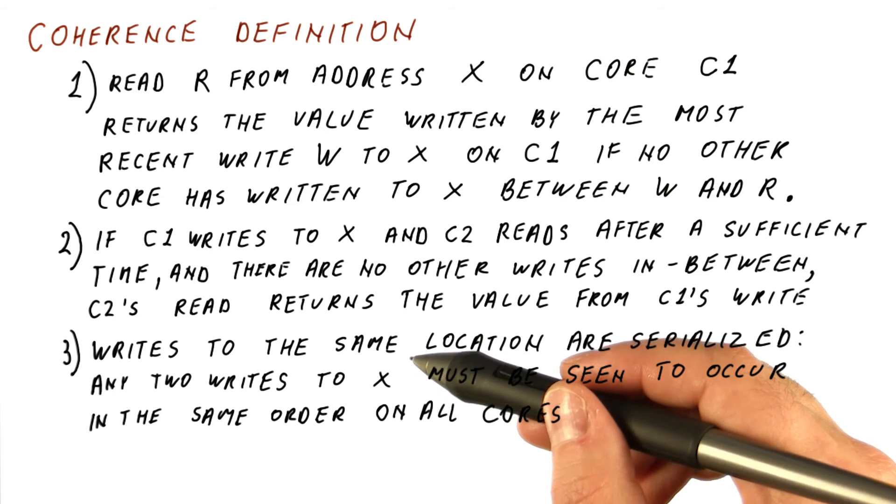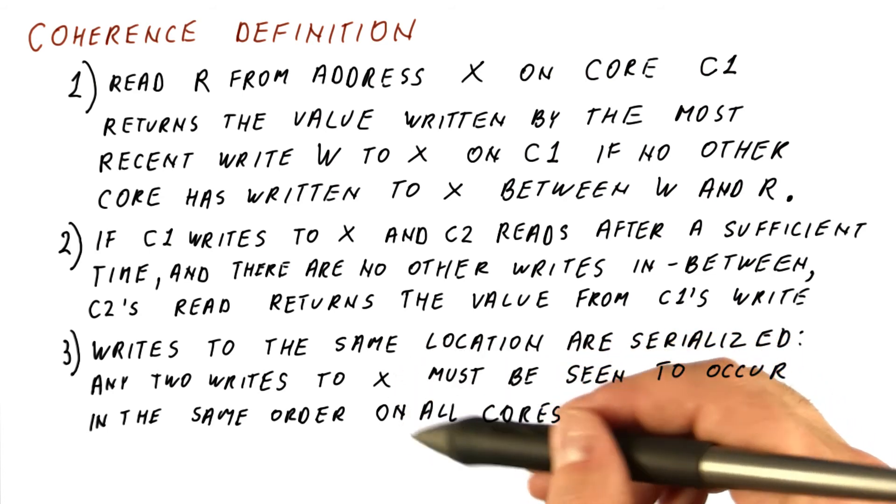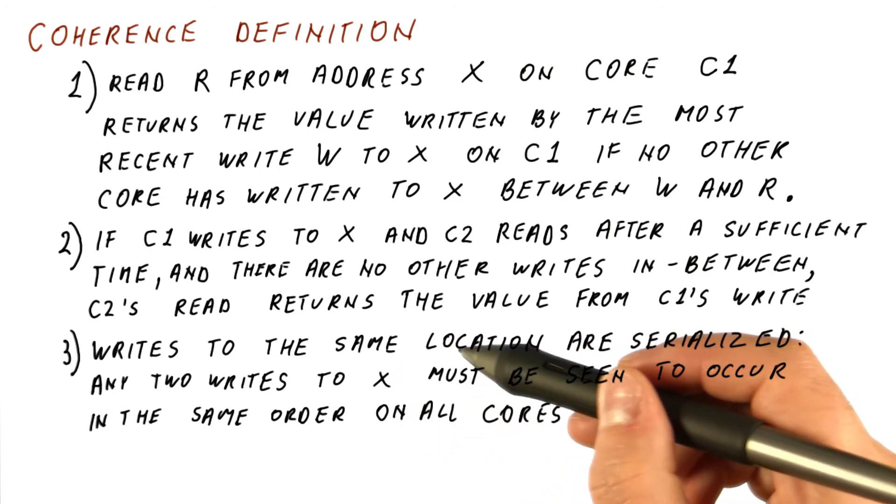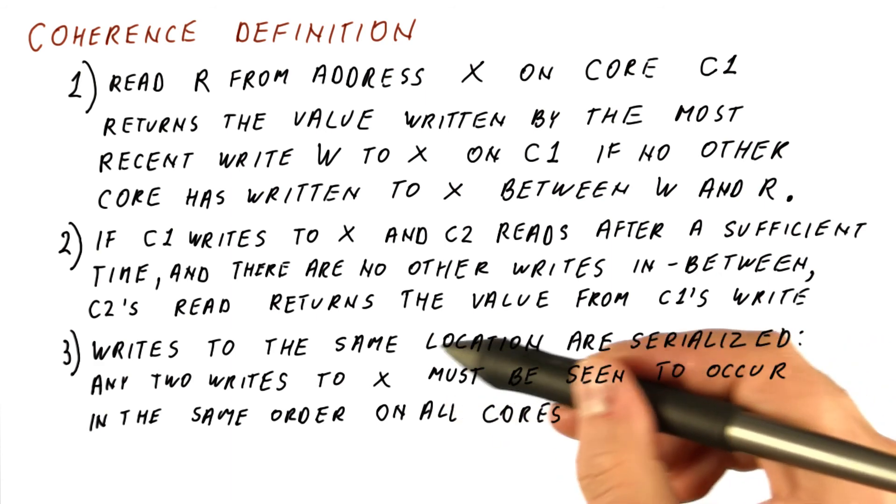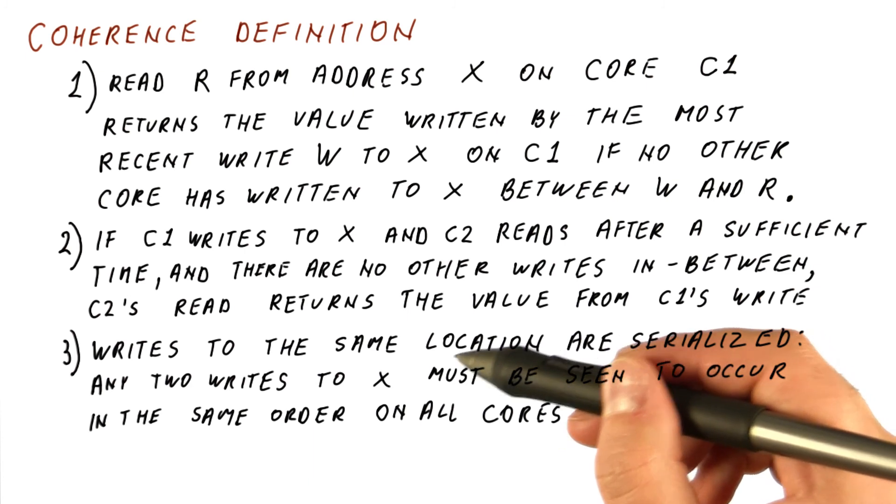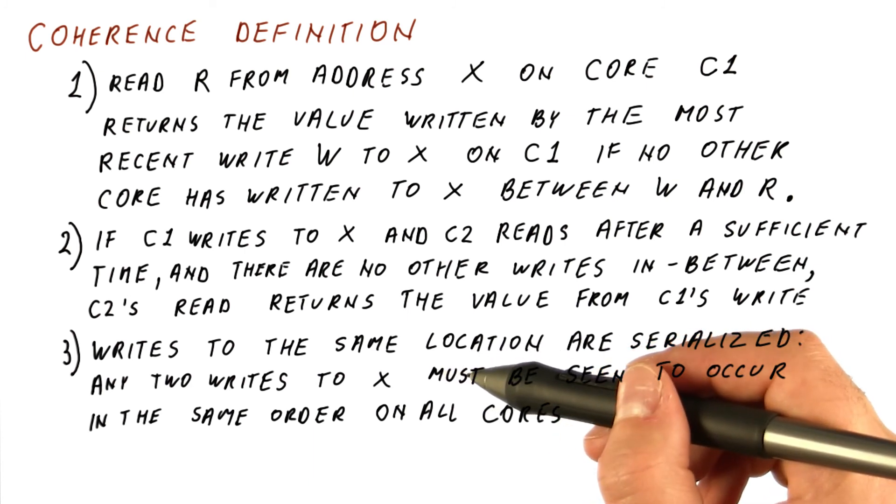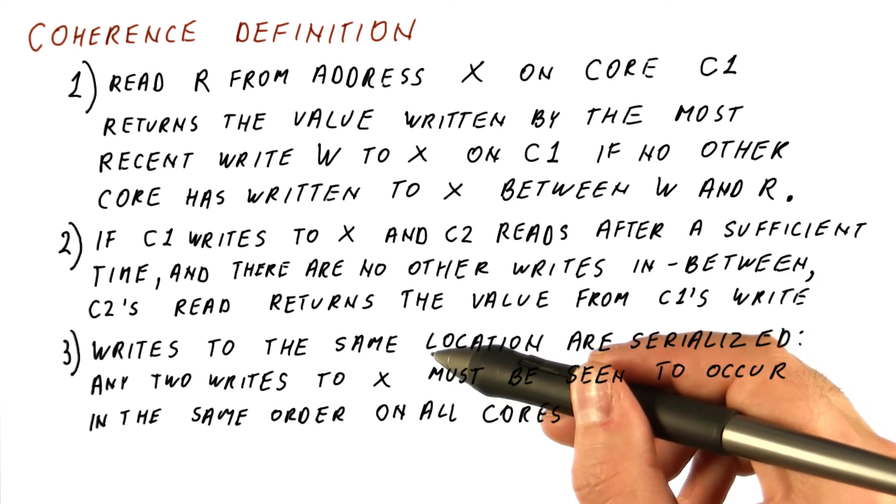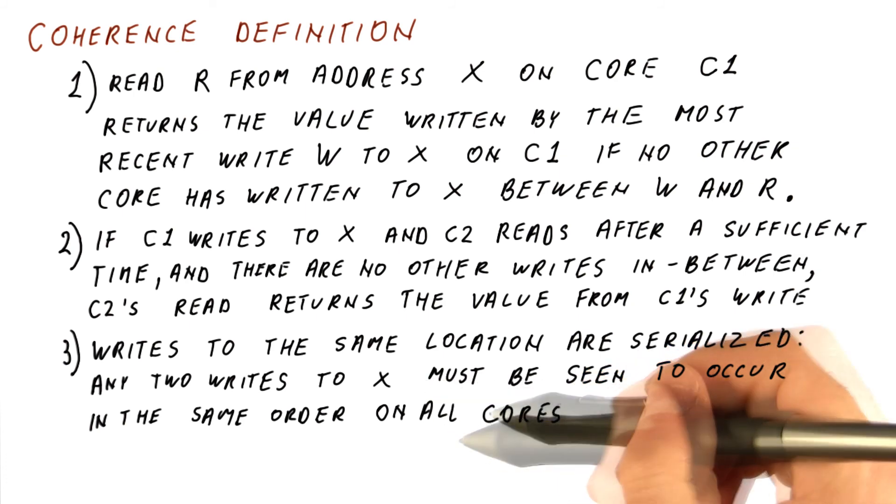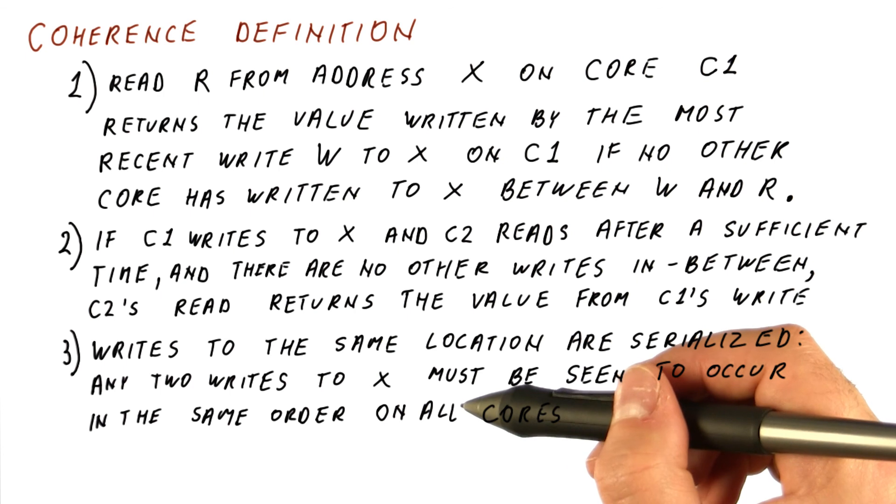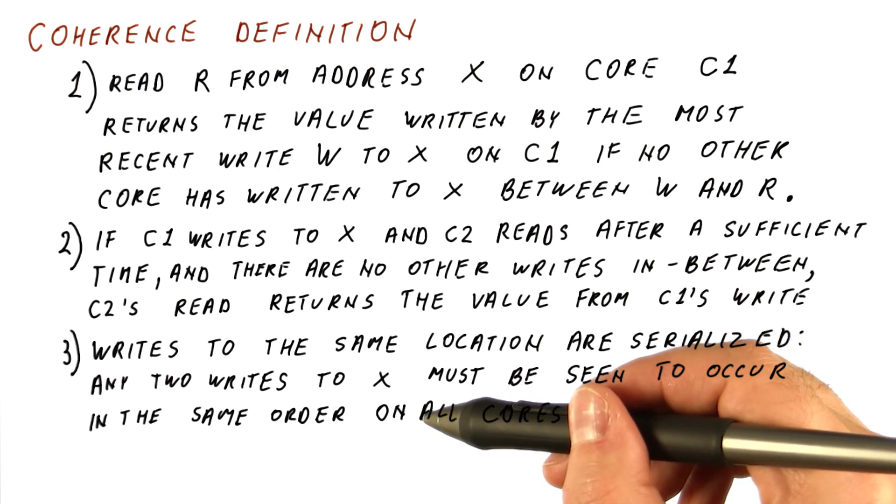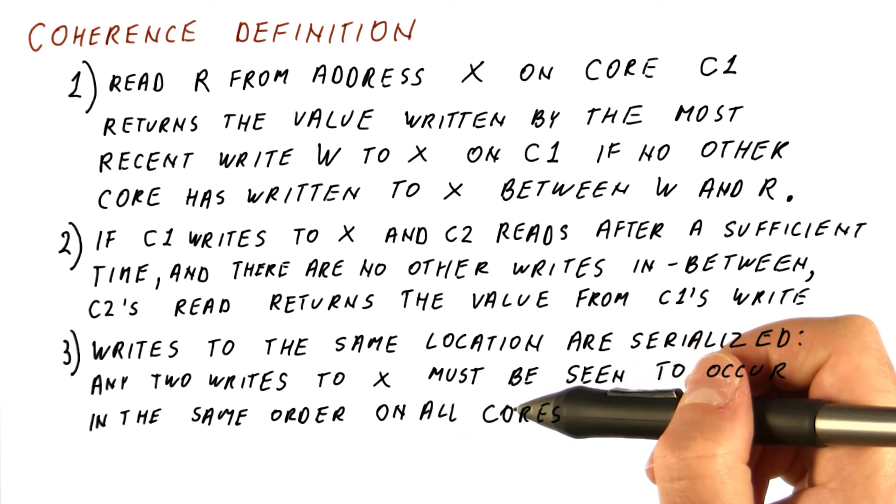Some other core sometime later reads and still sees c3's value. So what this is really saying is that everybody, including the writing cores, will see the value that is consistent with there being some particular order to the writes. It doesn't require any particular order. For example, the writes can happen almost simultaneously, in which case we are free to choose which happened first and which happened second. But we cannot allow some cores to think that one write was first and other cores think that another write was first.